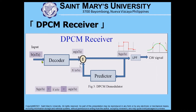The input of the decoder is represented by b-NTS as shown on this block diagram. It will go to the decoder with a certain decoder error — eq-NTS — that sums up with the predictor x-prime NTS. Once decoded, it will produce a quantized value, and then the low-pass filter will turn that quantized value into a continuous wave signal, recovering our original input signal.